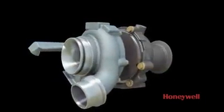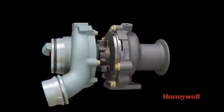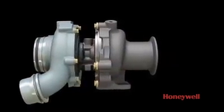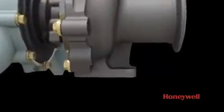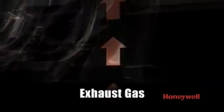To get more air into the engine, a turbocharging system starts with an engine's exhaust gas, power that is essentially wasted in non-turbo engines. This exhaust gas is channeled to the turbo, where it spins a turbine wheel.